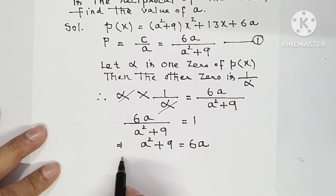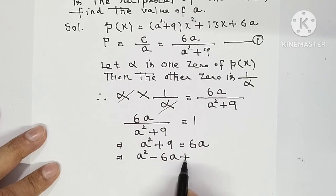6a left, so a² minus 6a plus 9 is equal to 0.